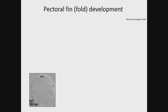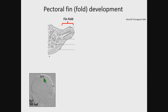Pectoral fin development starts with the formation of a bud, very similar to tetrapod limb development. A thickening of ectoderm known as the apical ectodermal ridge, or AER, extends and folds to form a structure known as the fin fold, and this is unique in fish. The fin fold is composed of ectoderm and is supported by two rows of actinotrichia fibrils. Actinotrichia are composed of collagen and actinodon proteins.